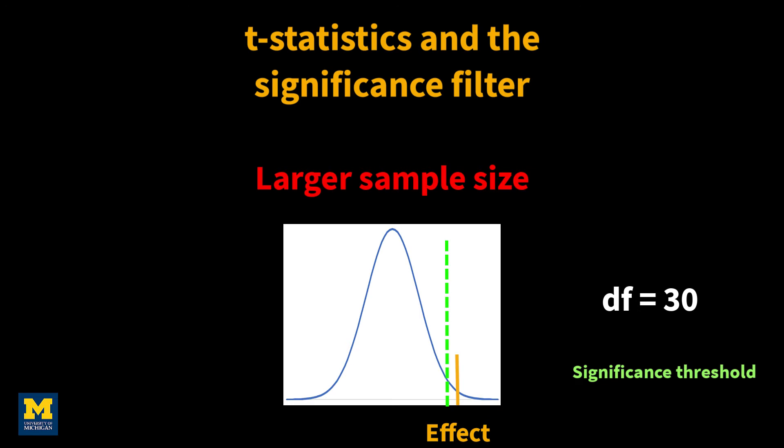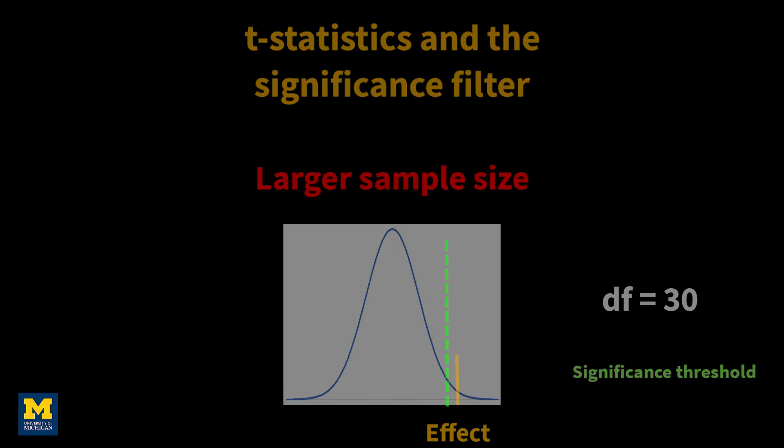Finding that two studies have the same effect size, even if one or both of them do not pass significance, is still important evidence for the consistency of an effect across studies and therefore for reproducibility. This could also mitigate the so-called significance filter, in which only significant results are reported, which leads to a skewed perception of the distribution of effects in a given field of research.